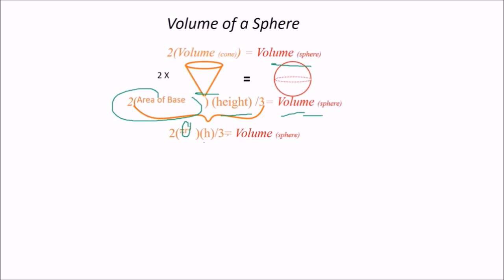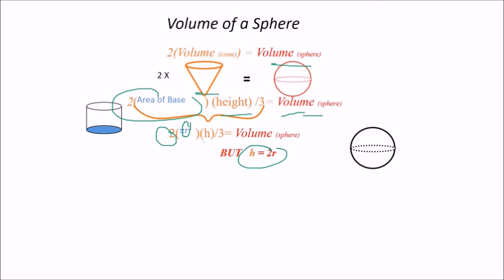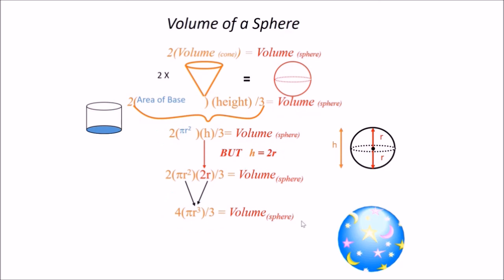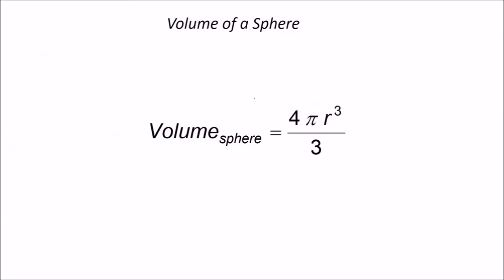We know that the height h of the cone equals 2r (the diameter), so substituting h = 2r: volume of sphere = (2/3) π r² × 2r = (4/3) π r³. So the volume of a sphere is (4/3) π r³.